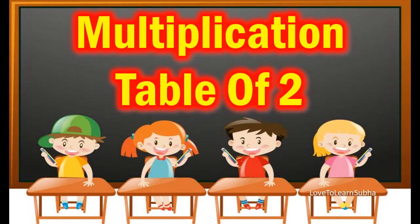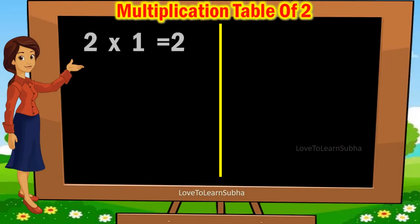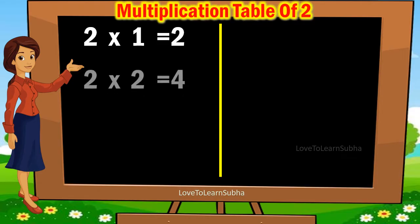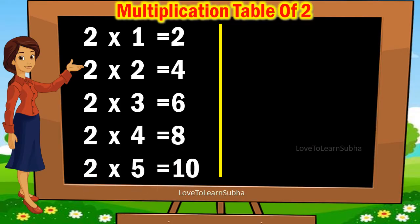Multiplication table of 2: 2 ones are 2, 2 twos are 4, 2 threes are 6, 2 fours are 8, 2 fives are 10.